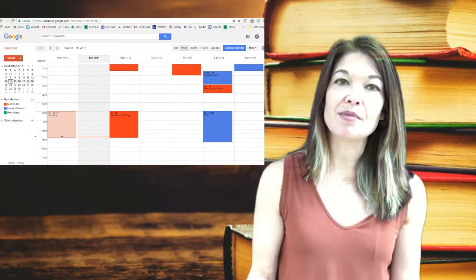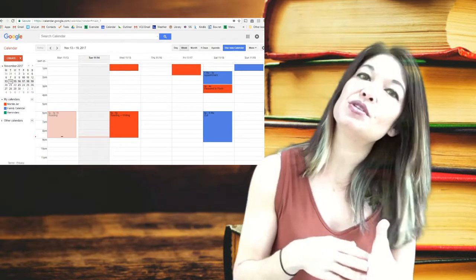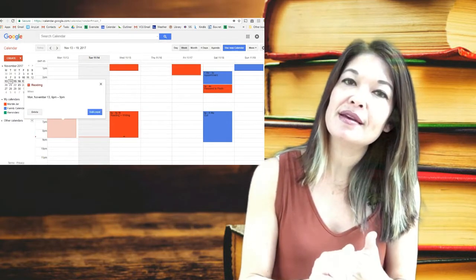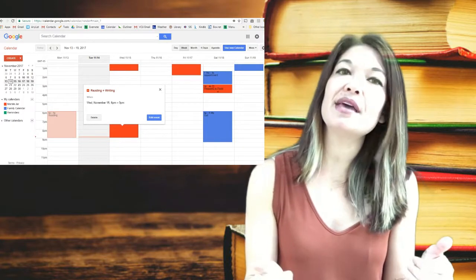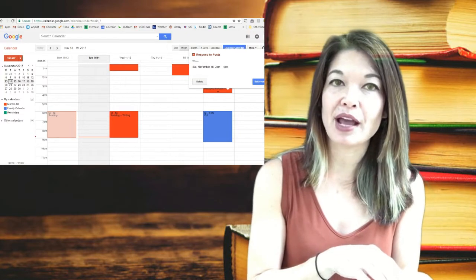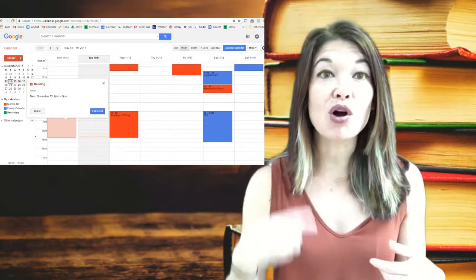Now I'm gonna look at my calendar and block off the time for the first week. I'm gonna do three hours of reading on Monday night, an hour of reading and two hours of writing on Wednesday night, and then I'll respond back to posts for an hour on Saturday afternoon.